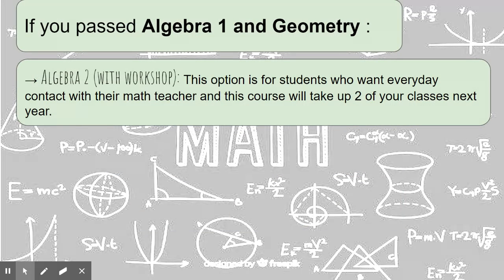If you passed Algebra 1 and Geometry already, you may take Algebra 2 with workshop. This is one of your options, and this is for students who want everyday contact with their math teacher. This course will take up two of your classes next year. So you will see your math teacher every day, you'll earn a math credit and also an elective credit, and you'll get Algebra 2.